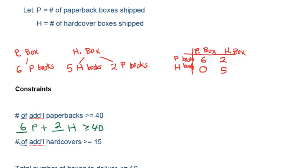The next constraint: number of additional hardcovers must be greater than or equal to 15. For the coefficient of p — what is the contribution of a paperback box to the number of hardcovers? Nothing, because there are no hardcover books in a paperback box, so the coefficient is 0. For h, one hardcover box contains five hardcover books, so its contribution is 5. This gives us 5h greater than or equal to 15.